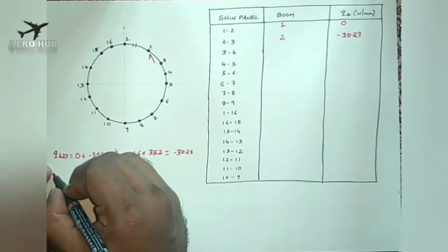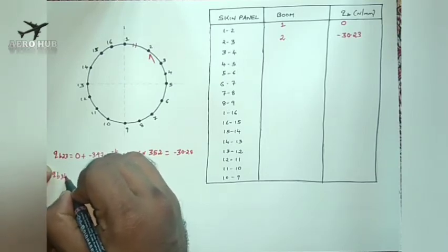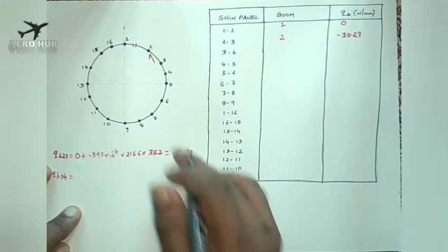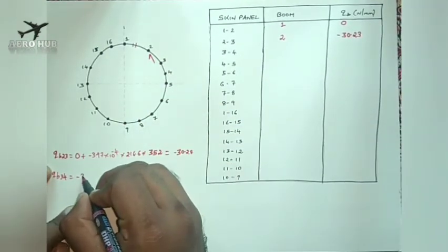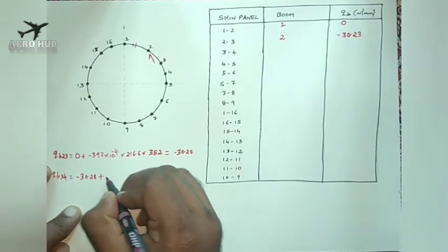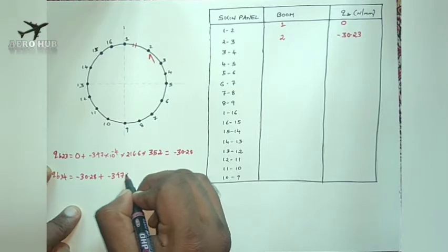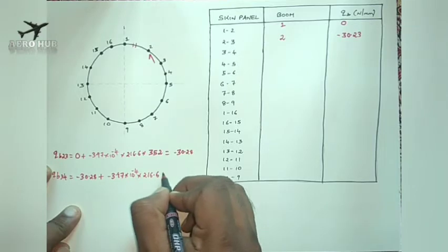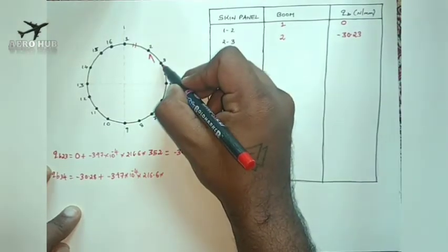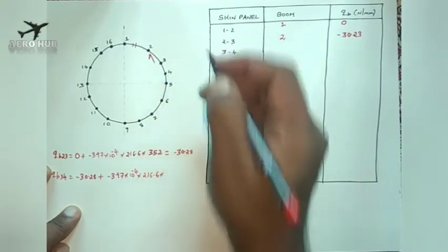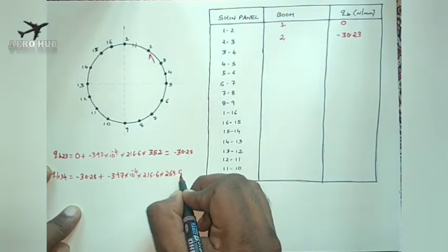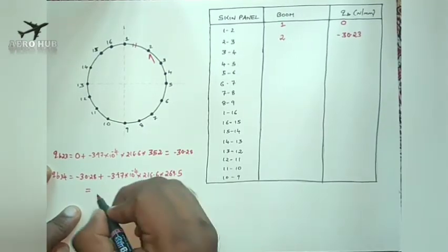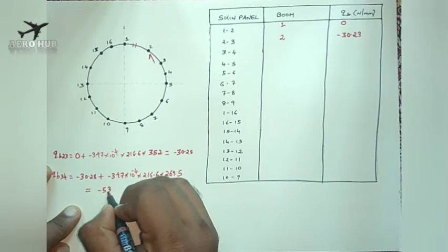Similarly, for QB3,4, we consider the shear flow for the previous skin panel QB2,3, which is minus 30.28. So QB3,4 equals minus 30.28, plus minus 3.97 into 10 power minus 4, times the boom area 216.6, times the distance of boom 3 from the neutral axis, which is 269.5. The answer will be minus 53.43 N/mm.